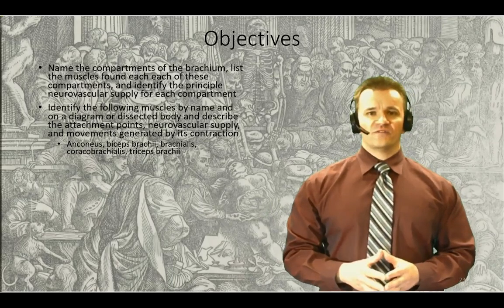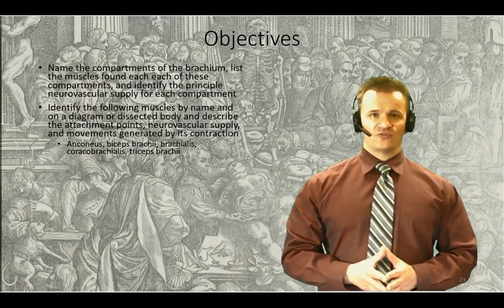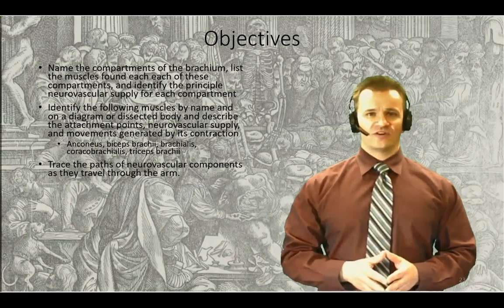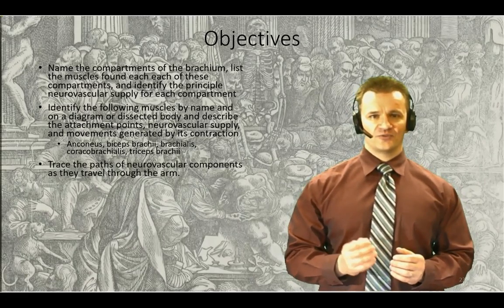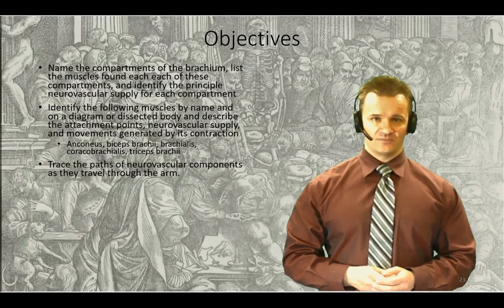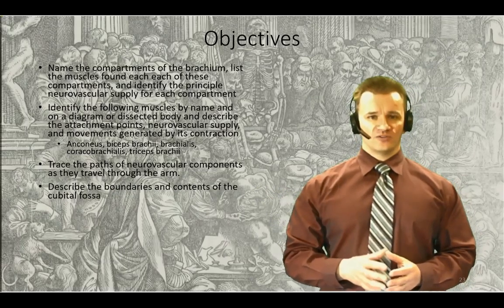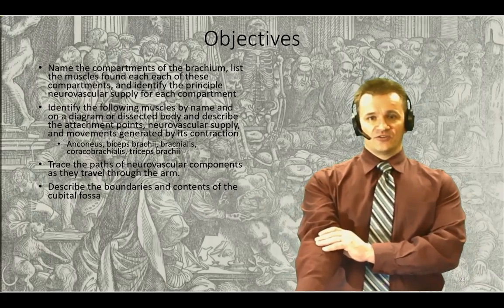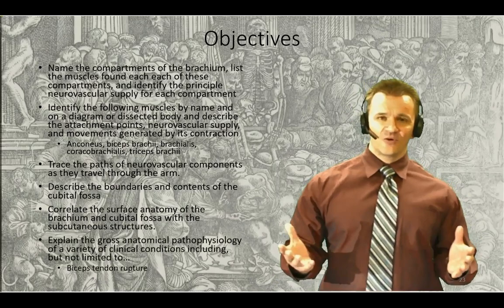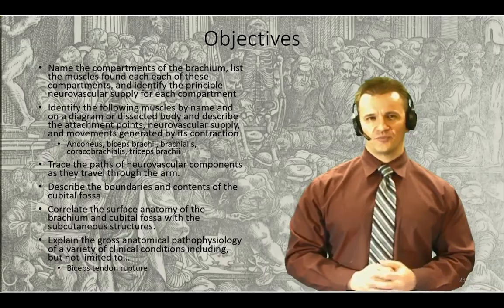Second, we'll take a specific look at the muscles found in the brachium, consider their origin and insertion points, and discuss the actions that they can produce. We're also going to discuss the course of neurovascular structures that run through the brachial region and highlight the importance of collateral circulation. Finally, we're going to take a look at the components of the cubital fossa, which is the anterior side of the elbow, and the surface anatomy of this region as a whole. Peppered through the lesson will be a good number of clinical correlations.